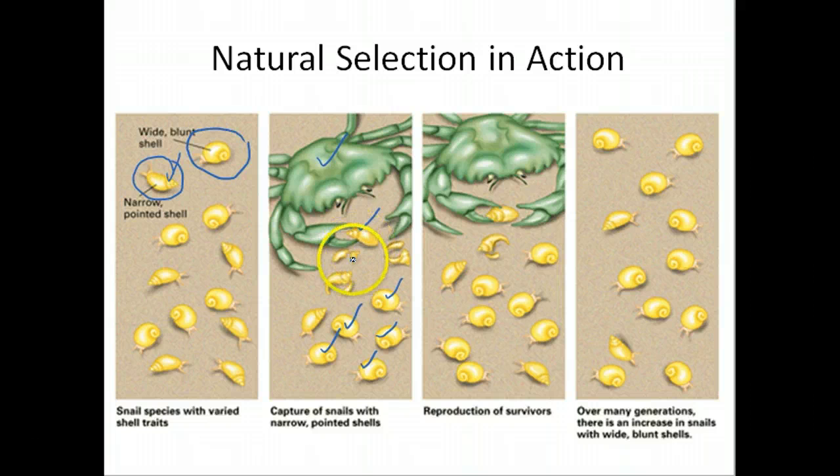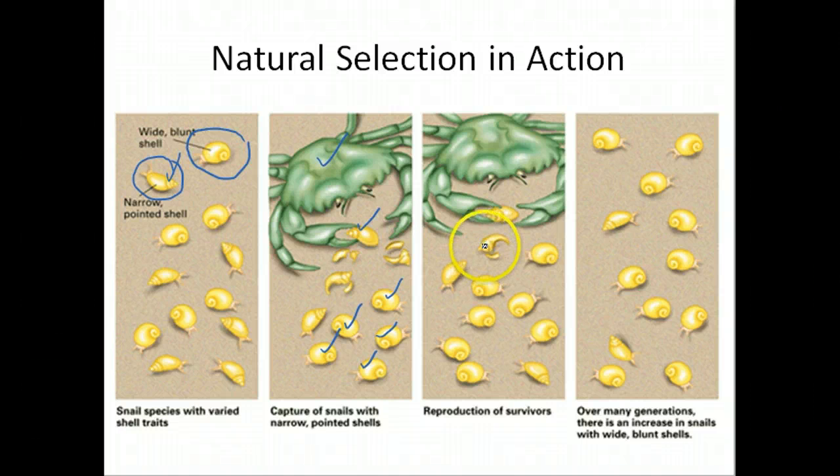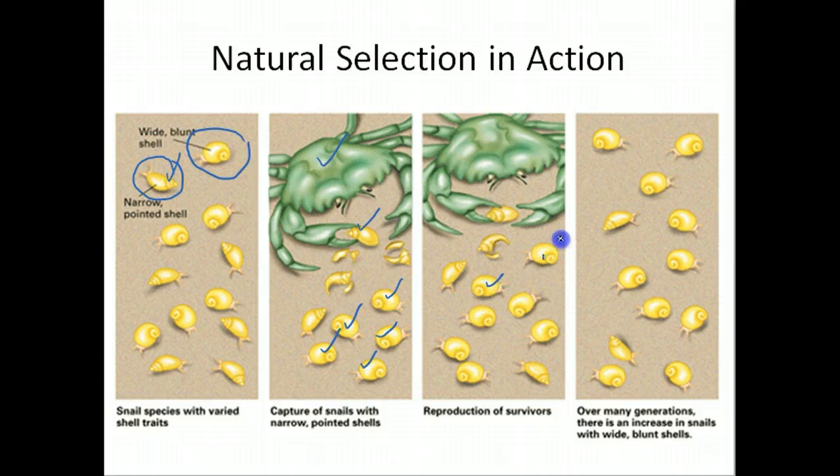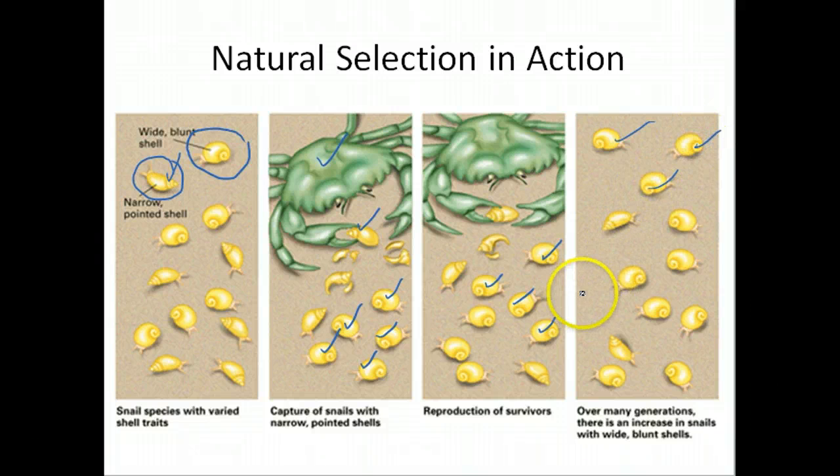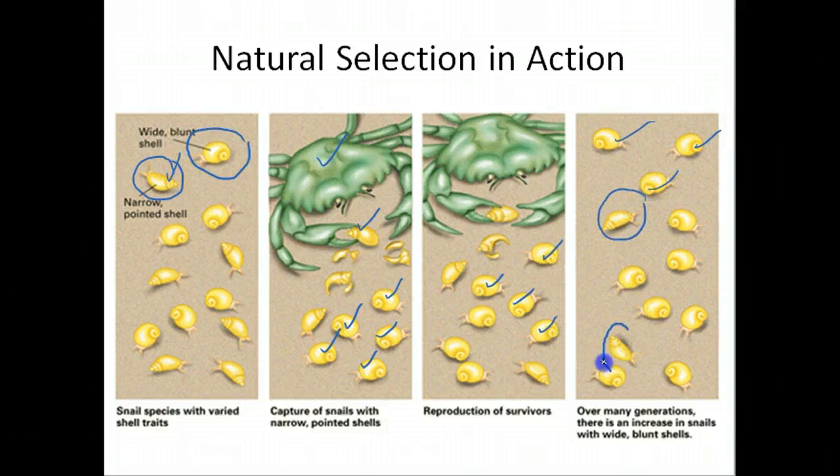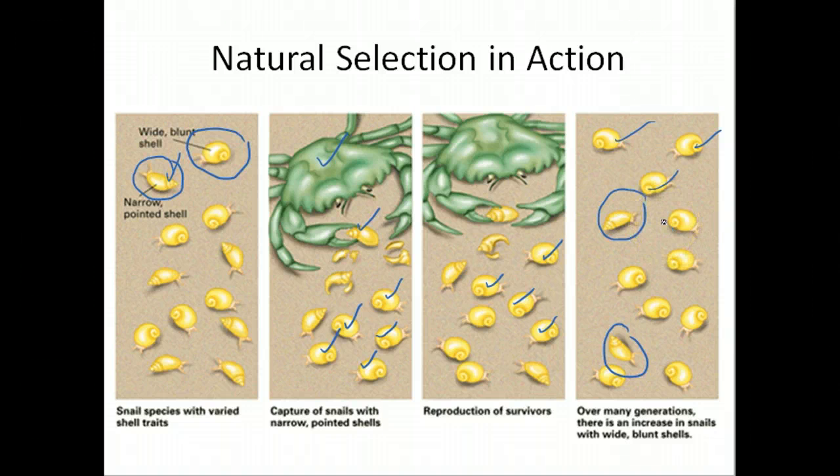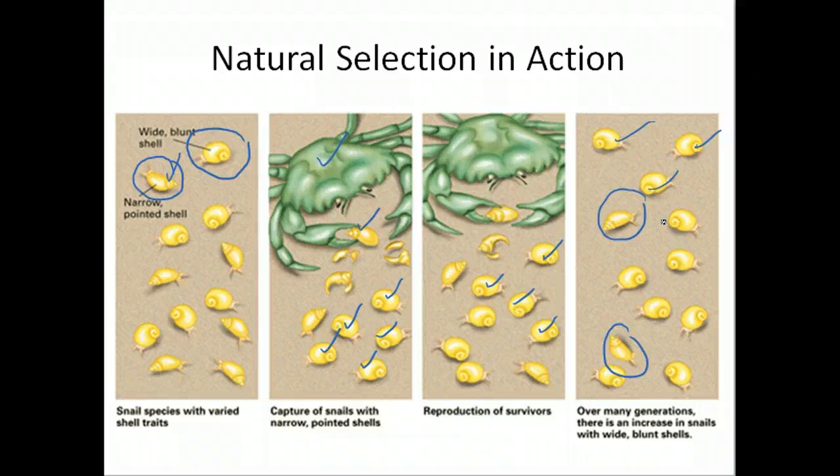The fitness level of those pointed snails is very low. They get eaten, they do not get a chance to pass on their genes. Because of this, those genes, those mutations that cause them to be pointed, are essentially removed from the population because the only offspring that are around are these rounded ones. So the only genes that will be passed to the next generation are traits for rounded shells. For the most part, this population is going to be rounded. Occasionally you'll get a little pointed guy through mutation, but overall the population is going to stay a certain way because of this interaction between predator and prey. There are certain things that put pressures on certain populations, and this crab is definitely one of them.